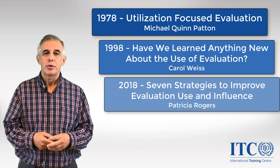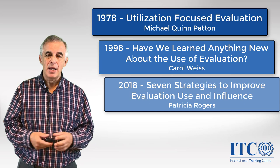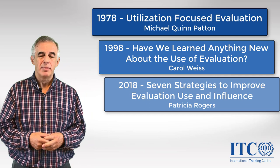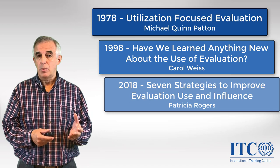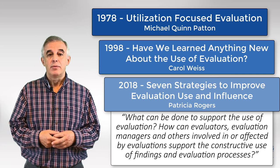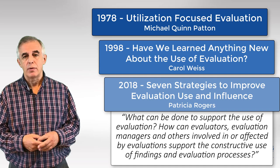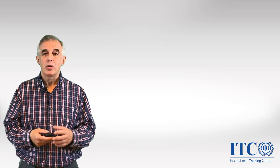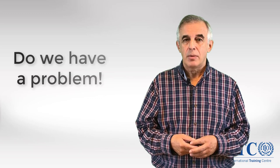Now, 2018 — Patricia Rogers publishes an article, 'Seven Strategies on Enhancing Evaluation.' Her article is based on a session she conducted at the American Evaluation Association Conference, which was very well attended. I was there, and Patricia talks about what can be done to support the use of evaluation. Strategy number one that Patricia proposes is: identify intended users and intended use early on. Didn't we know that from Michael Patton's early publications? Yes, we did. But thought leaders still have to repeat that for some reason. So I think we do have a problem.